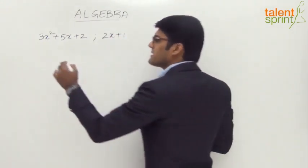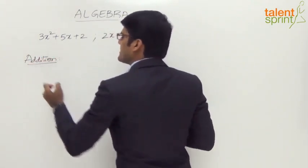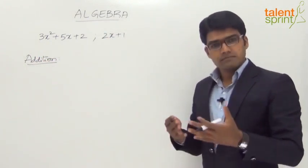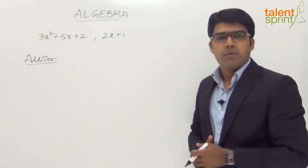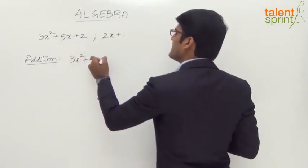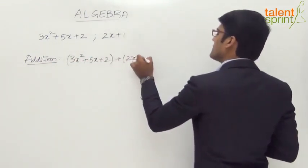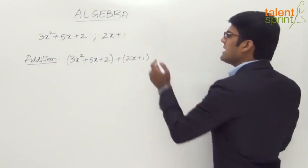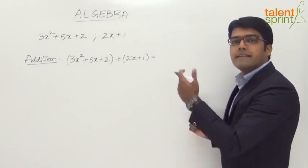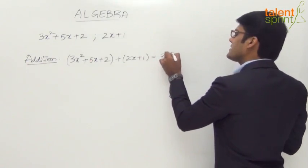Now let us look at the first and basic operation — addition of two polynomials. This is very simple. We just need to collect similar terms, add them, and find out the required answer. Here we have 3x squared plus 5x plus 2, plus the second polynomial 2x plus 1. All we need to do is collect similar terms. We have got only one term of degree 2 — only one term where the power of x is 2 — so we can directly take it as 3x squared.